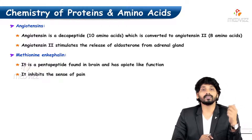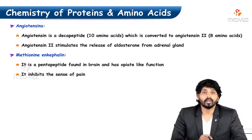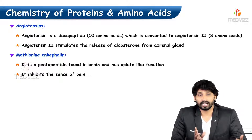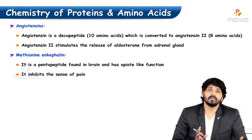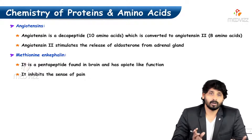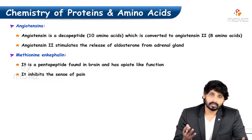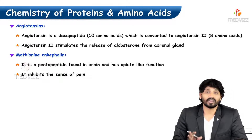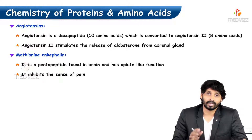Methionine-enkephalin is a pentapeptide — meaning it contains 5 amino acids — mainly found in the brain, and has opiate-like function. It inhibits the sense of pain.